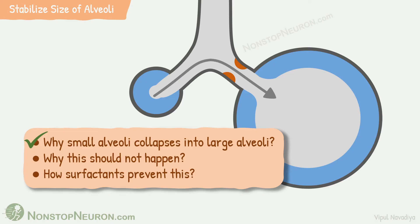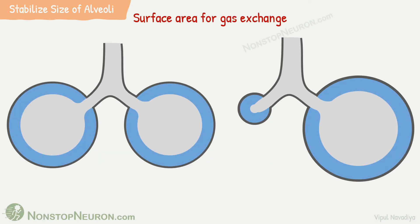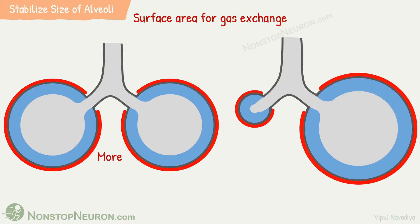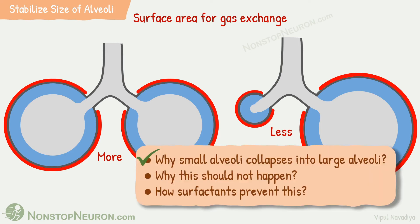Now, the second question: why should this not happen? The answer is to maintain alveolar surface area for gas exchange. The total surface area of uniformly sized alveoli is greater compared to the surface area of non-uniformly sized alveoli. This decrease in surface area impairs gas exchange. So it's important to prevent such collapse and stabilize the size of alveoli. That checks the second question as well.